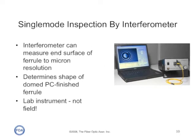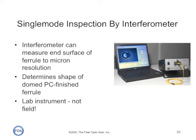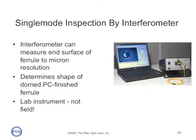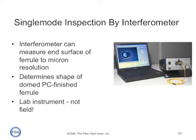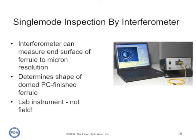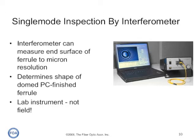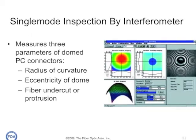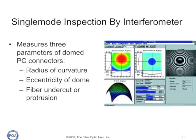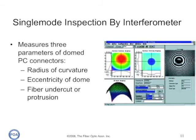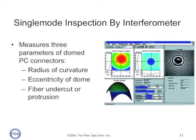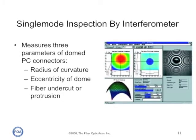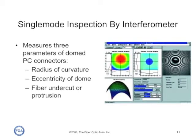On single mode connectors, we do another type of visual inspection using an interferometer. The interferometer can measure the end surface of the connector and actually determine the shape of the PC or physical contact finished dome of the ferrule. Interferometry is only used with single mode connectors generally and it's only a lab instrument, not a field instrument. Interferometers show us three parameters of single mode domed polish connectors: the radius of curvature, the eccentricity of the dome — or whether the dome is centered on the fiber — and whether the fiber has been undercut during the polishing process. It's an extremely sensitive way of determining the quality of single mode connectors.